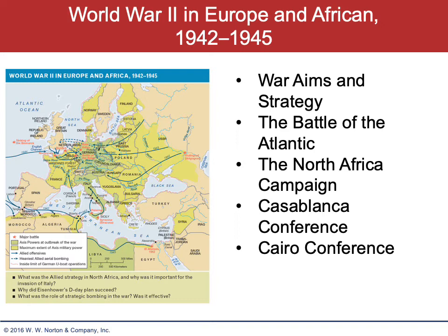In 1943, the United States and Britain attacked Sicily and then Italy proper, starting with Operation Husky followed by Operation Baytown. The United States went through yet another series of amphibious assaults along the Italian peninsula. Much of this was done for strategic purposes, but a lot of it was also logistical training — teaching British and American Army, Navy, Air Corps, and Marines how to coordinate these attacks.